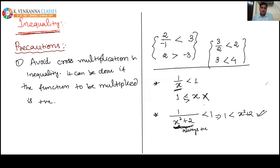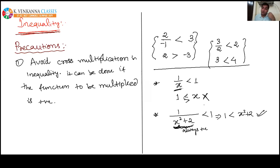Conclusion: avoid cross multiplication in inequality. It can be done only when the function to be multiplied is always positive. Please keep this precaution in mind when solving inequality questions — do not do cross multiplication unless you're sure the function being multiplied is positive.